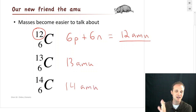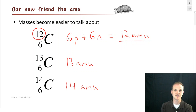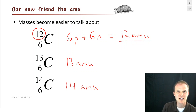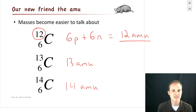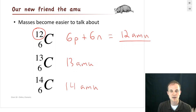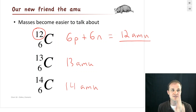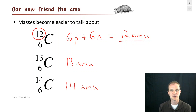For bigger atoms, it doesn't work so well — there's this thing called Einstein and E equals MC squared, and it kind of goes a little crazy. But for small atoms and for this class, we can go ahead and say our mass number for an individual atom is the same as its mass in AMU.